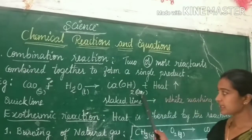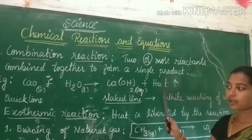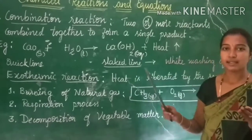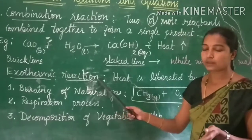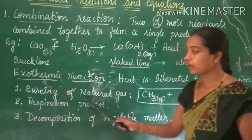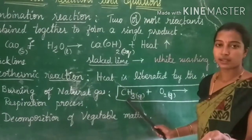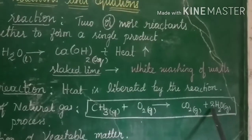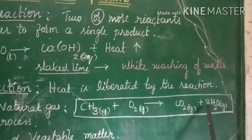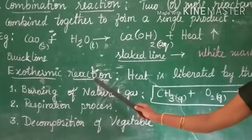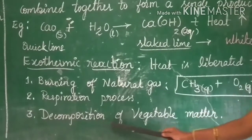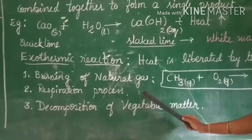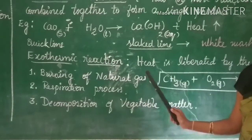In this example, heat is liberated. This kind of reaction is called an exothermic reaction. During the reaction, heat energy is liberated — that kind of reaction is called an exothermic reaction. For example, burning of natural gas reacts with oxygen present in the atmosphere and produces carbon dioxide and water vapor, releasing heat energy. Similarly, our respiration process and decomposition of vegetable matter are also examples of exothermic reactions. Exothermic means heat is liberated during the reaction.